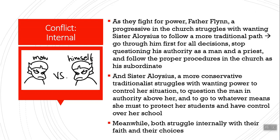They're both also struggling with their faith and their choices — they have doubts in some sense. Father Flynn expresses his doubt in the first act. Sister Aloysius seems like she does not have any doubts — she knows what he did and she's going to go after him. Donald Mueller's mother has doubt, but she feels comfortable with it — she says things like 'maybe we don't have to know, and that's okay.' Doubt is not just the title but really the source of conflict: doubt in the church, doubt in their God, doubt in themselves, doubt in each other.